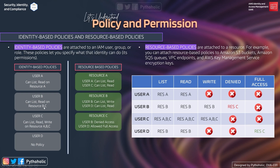For User B: it can list and read on Resources B and C from the identity-based policy, but Resource C has a denied access in the resource-based policy. Resource B's resource-based policy also allows list and write. So User B ends up with list, read, and write on Resource B, but has no access on Resource C due to the explicit deny, and also has no access on Resource A — which is an implicit deny.